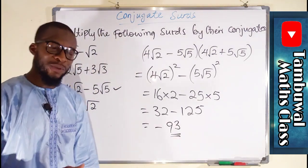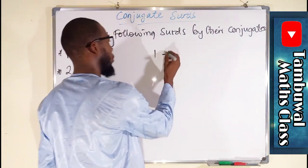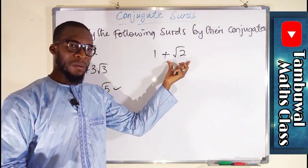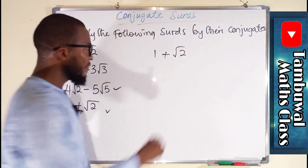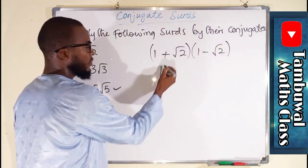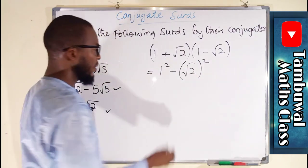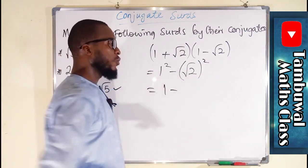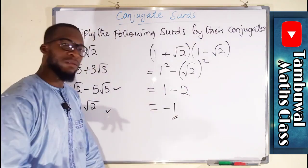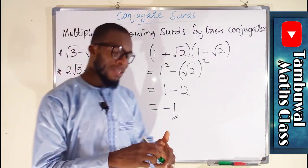The last one is 1 plus root 2. This time the first term is rational while the second is a surd, but notwithstanding, we can still take the conjugate, which is 1 minus root 2. Using difference of two squares: 1 squared minus root 2 squared. 1 squared is 1, root 2 squared is 2, and 1 minus 2 is negative 1. Negative 1 is a rational number, so this confirms the approach.